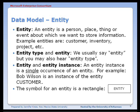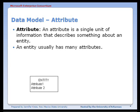The symbol for an entity is a rectangle. The next term for data modeling is an attribute. An attribute is a single unit of information or data that describes something about an entity. An entity can often, and often does, have many attributes.